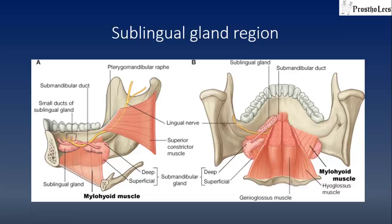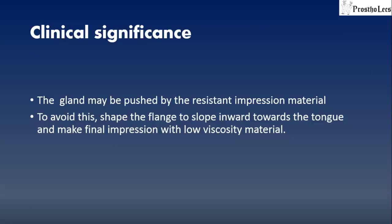The sublingual gland region: the sublingual gland rests above the mylohyoid muscle. When the floor of the mouth is raised, the gland comes quite close to the crest of the ridge and reduces the vertical space available for extension of the flange in the anterior part of the mouth. The gland may be pushed by resistant impression material. To avoid this, shape the flange to slope inwards towards the tongue and make the final impression with a low-viscosity material, which will not push the gland due to the less pressure exerted.